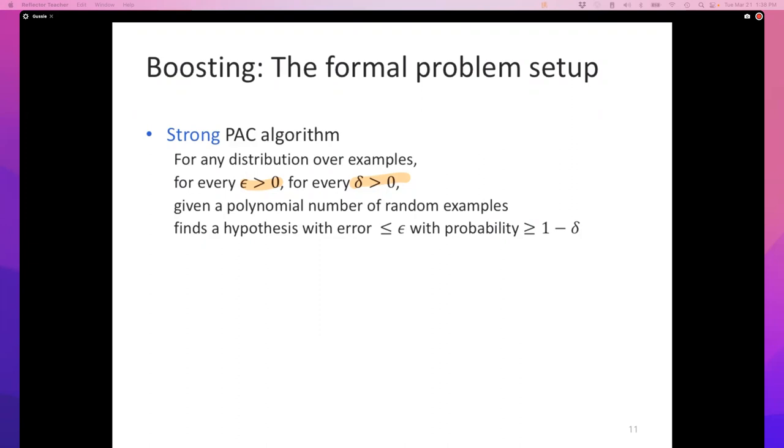If you run this algorithm thousands and thousands of times on thousands of data sets that are randomly sampled, in 1 - δ fraction of them this algorithm would have produced a classifier whose error is less than ε.